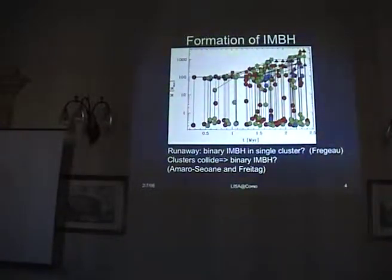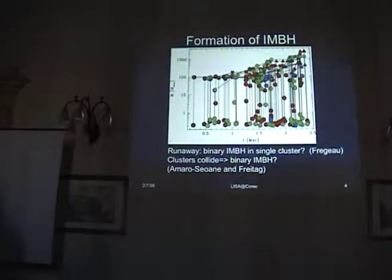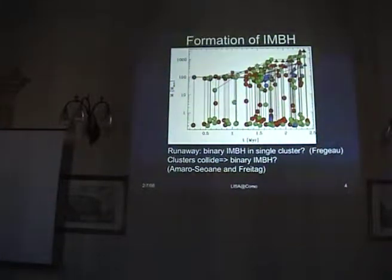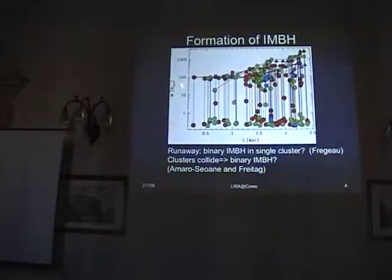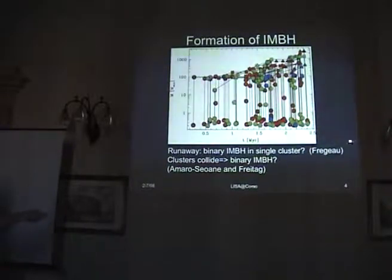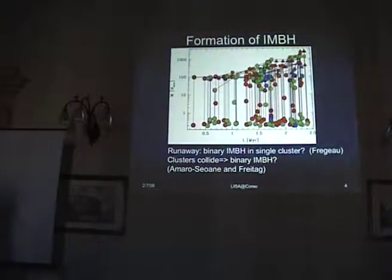The idea is that if you have a young massive stellar cluster — think of a globular cluster about one million years old — then there are massive stars in the system. They're big, and if they can sink to the center before the first stars evolve and start losing mass, they can physically collide and stick. This is shown in a colorful diagram produced by the Northwestern group, and John Fregeau in particular, showing the collision history over some millions of years of objects that turn out, in one case, to be more than 2,000 solar masses, another more than 1,000, and a few hundred as well.